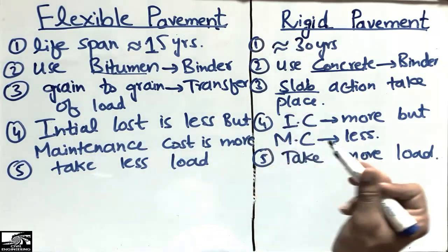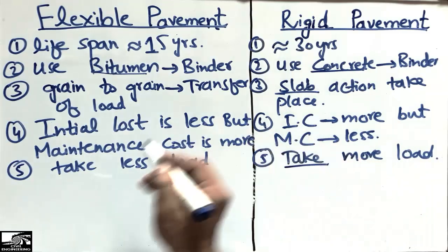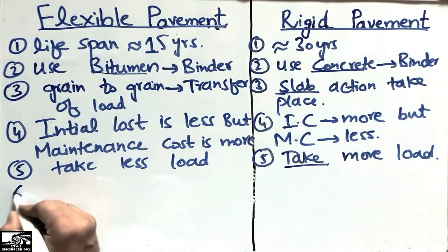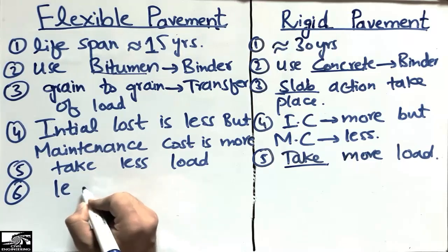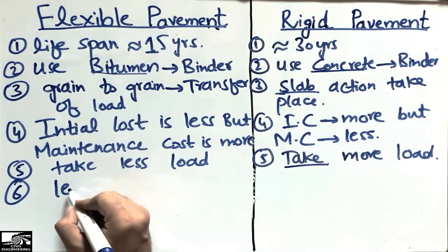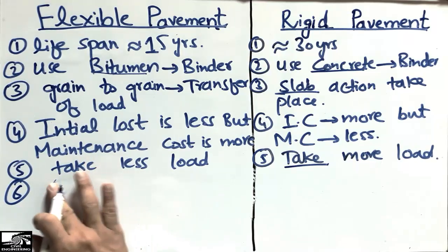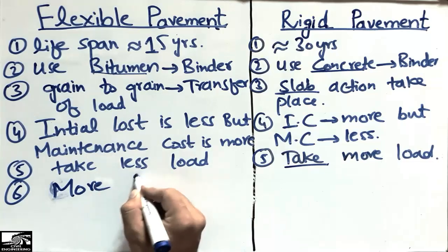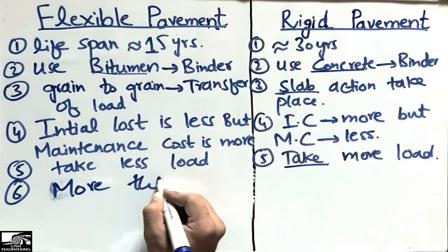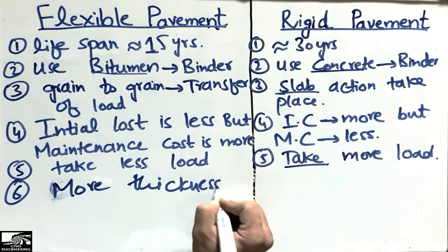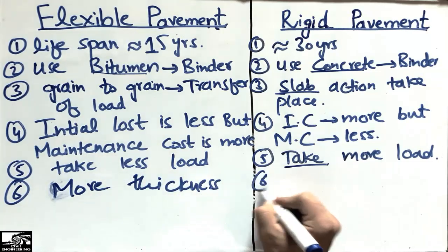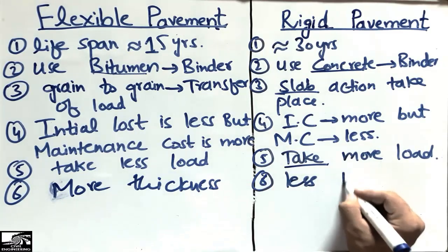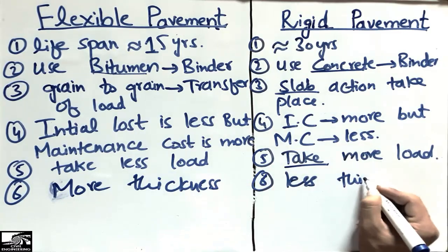The sixth difference is related to thickness. Flexible pavement usually has more thickness, while rigid pavement is of less thickness in comparison to flexible pavement.